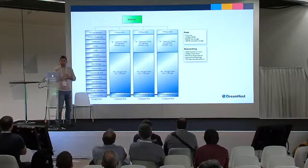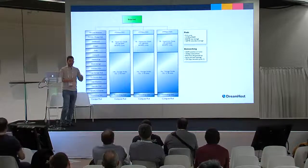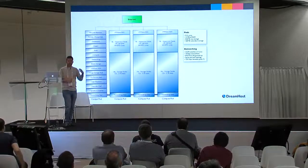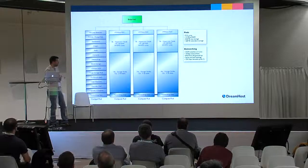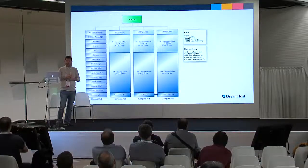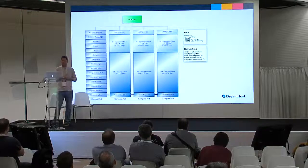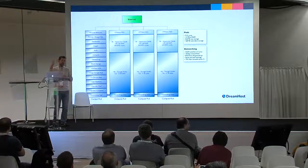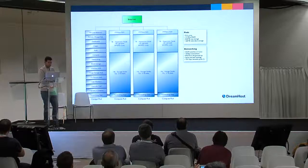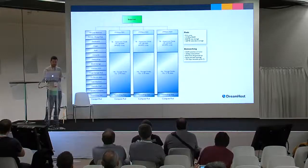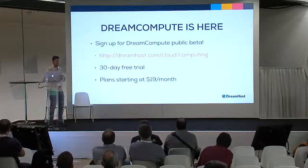DreamCompute's architecture is also open — we're happy to share with anyone interested what our hypervisors and storage nodes look like. We use 10-gig networking everywhere with white box switches powered by Cumulus Linux, which is one of our partners. Cumulus Networks is here at the conference — you should go talk to them about that. It's a wonderful solution.